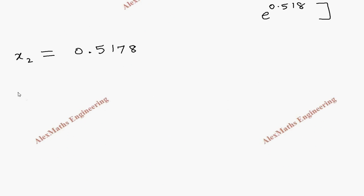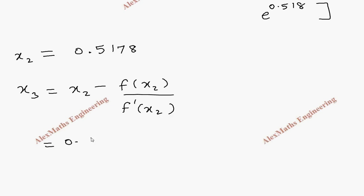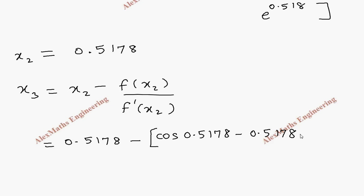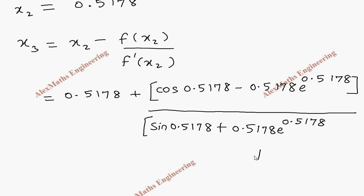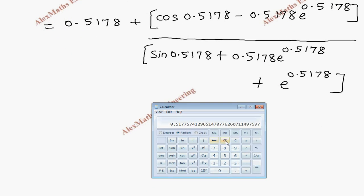Now let's find x3. By formula, x3 = x2 - f(x2) / f'(x2) = 0.5178 - [cos(0.5178) - 0.5178·e^0.5178] / [sin(0.5178) + 0.5178·e^0.5178 + e^0.5178]. We proceed with the calculator.